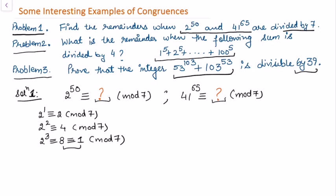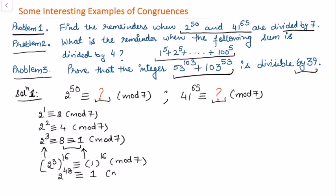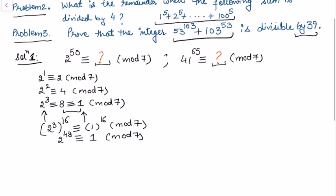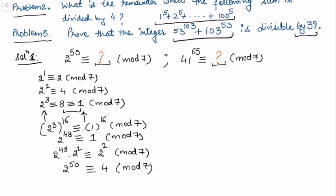Since 2 to the power 3 is congruent to 1 modulo 7, we can raise both sides to the power 16, giving 2 to the power 48 congruent to 1 modulo 7. Since we want 2 to the power 50, we multiply both sides by 2 squared. The left-hand side becomes 2 to the power 50 and the right-hand side becomes 4 modulo 7. So 4 is the remainder when 7 divides 2 to the power 50.